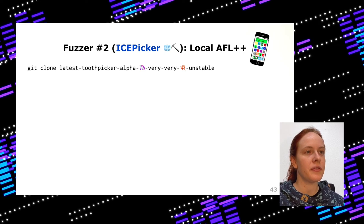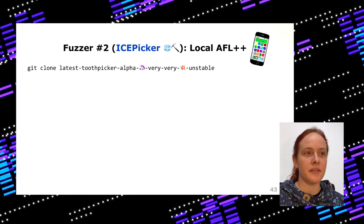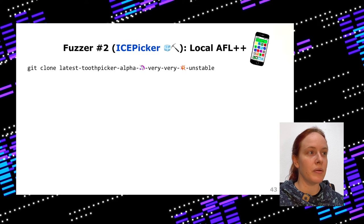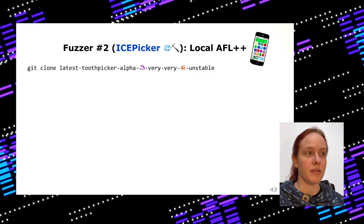Since these first fuzzing results were very promising, I decided to use the latest Toothpicker version and extend it for fuzzing ARI. I called it IcePicker because the Intel chips are also called Ice. I just cloned Dennis's latest Toothpicker Alpha — which is very very unstable — but this version actually runs locally on the iPhone without any interaction with macOS or Linux. It doesn't need to exchange any payload via USB, and it's using AFL++, which is a much faster mutator than Radamsa.